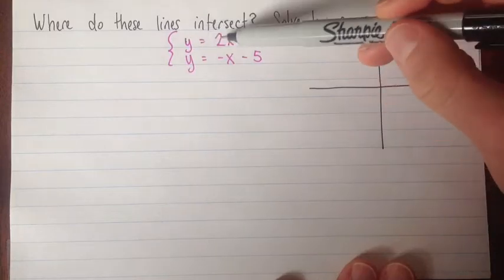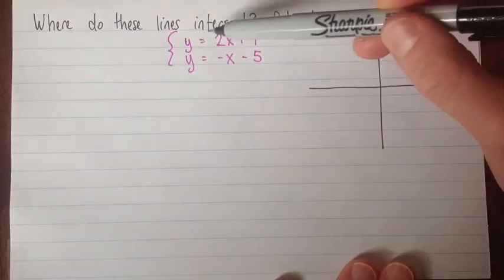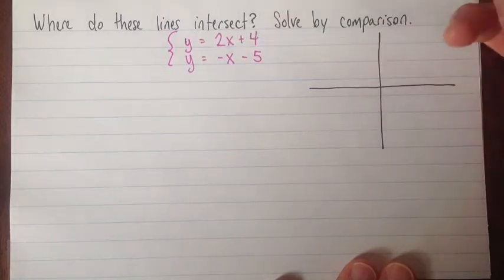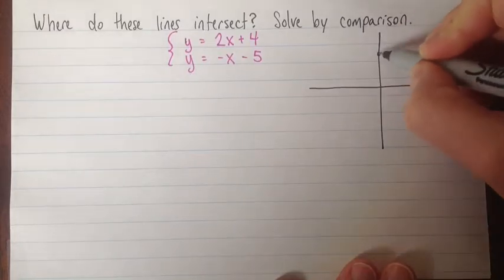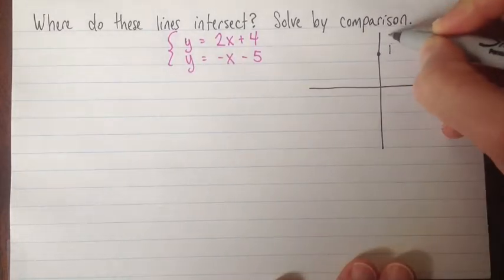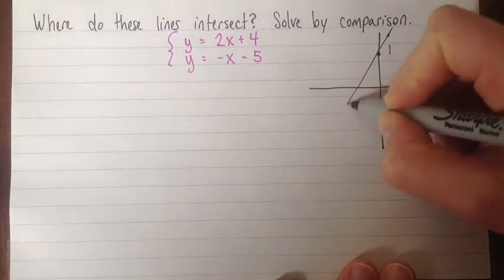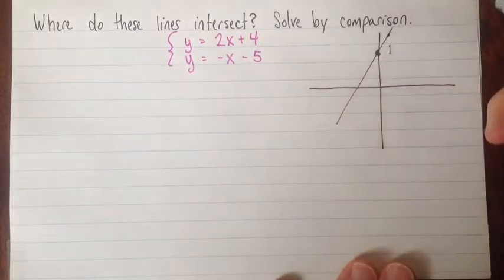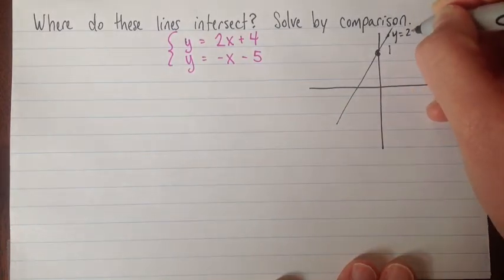Okay, so the first equation is y equals 2x plus 4. So this is slope intercept form. So our slope is 2 and the y intercept is 4. So I put my form up here. The slope of 2 means for every unit I go over, I'll go up 2. So it looks sort of like this.